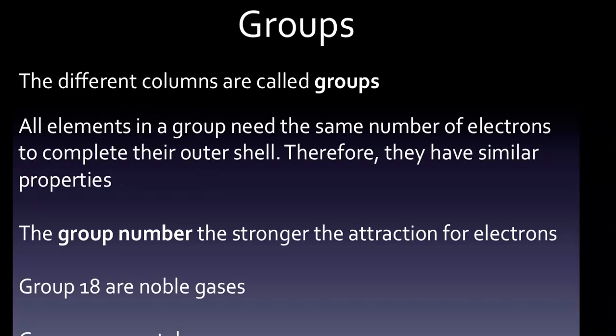The different columns are called groups. All elements in a group need the same number of electrons to complete their outer shell. Therefore, they have similar properties. For example, all the elements in the far left column are metals and have just one electron in their valence shell and lose electrons with relative ease.